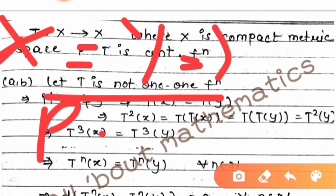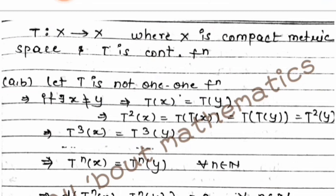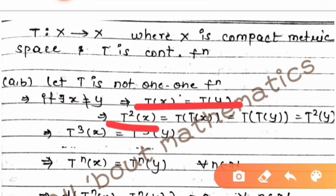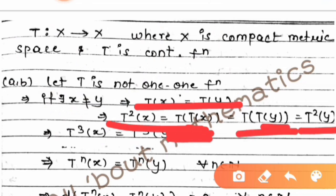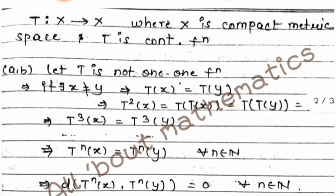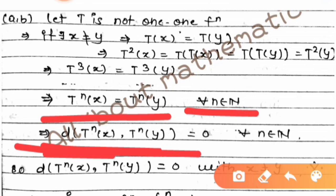So if T is not one-one, then there exist x, y with x ≠ y such that T(x) = T(y). From T(x) = T(y), applying T gives T²(x) = T²(y), and similarly T³(x) = T³(y). By induction, T^n(x) = T^n(y) for every n in the natural numbers. Therefore d(T^n(x), T^n(y)) = 0.